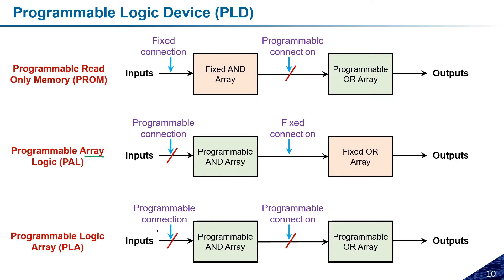In terms of flexibility: ROM is not flexible — once designed for a particular function, changes are not possible. PROM offers some flexibility since the OR array can be programmed. PAL offers some flexibility since the AND array can be programmed. The maximum flexibility is found in PLA, which is the most flexible for designing functions as per requirement.